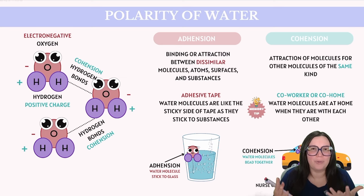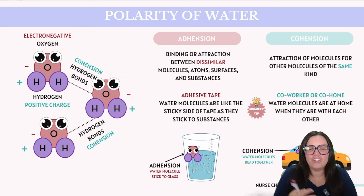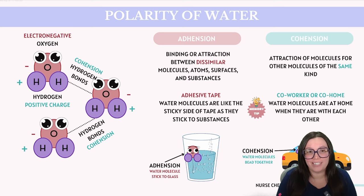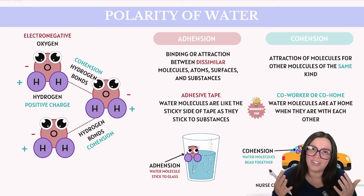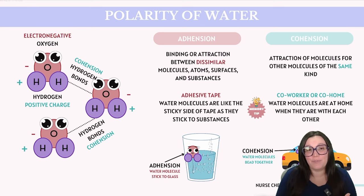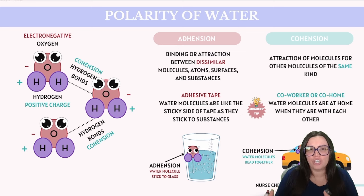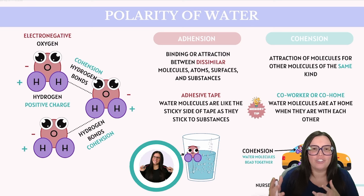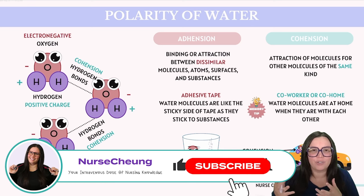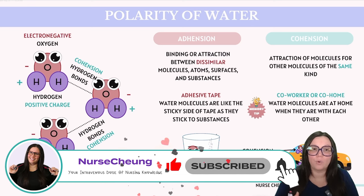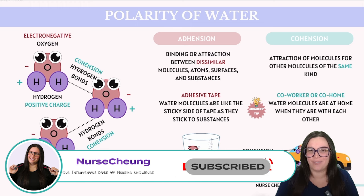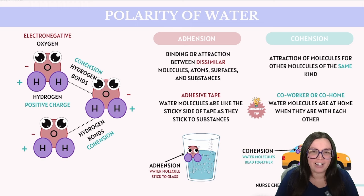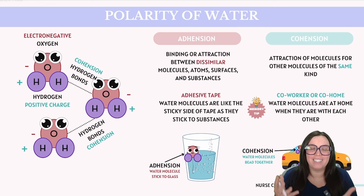Water is truly a remarkable molecule. It's not just essential when it comes to life, but it's because of its unique properties that makes it crucial for biological functions. One of the key features when it comes to water is its structure and polarity. Water molecules are shaped in such a way that oxygen atoms, which are highly electronegative, tend to attract more electrons towards itself compared to the hydrogen ions it's bonded with. Oxygen and hydrogen form covalent bonds.